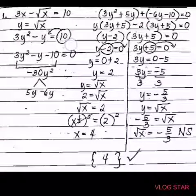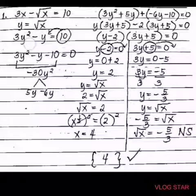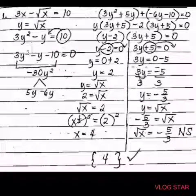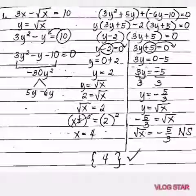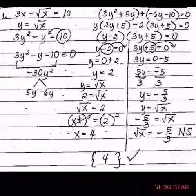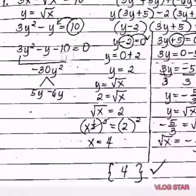Take note: we let y equals square root of x, so we change square root of x into y. Where did the squared come from? Because square root of x is equal to x raised to one-half, and squaring gives x raised to one. So we write 3y squared minus y, then copy equals 10. To solve this, we transpose 10 to the other side — it becomes negative 10 — so 3y squared minus y minus 10 equals 0.